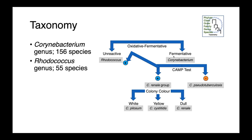Overall, we have 156 species of Corynebacterium and 55 species of Rhodococcus. These can be differentiated not only morphologically but using the oxidative-fermentative test, with Corynebacterium being fermentative. Corynebacterium can then be subdivided based on the CAMP test. Corynebacterium pseudotuberculosis, a very important veterinary pathogen, is CAMP-negative, while the Corynebacterium renali group, which causes urinary tract infections, are CAMP-positive.